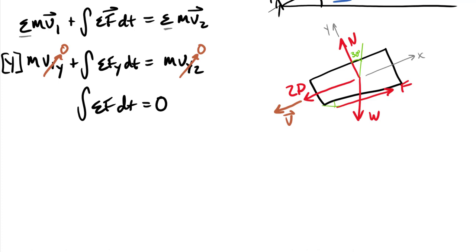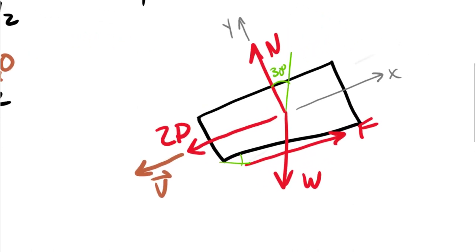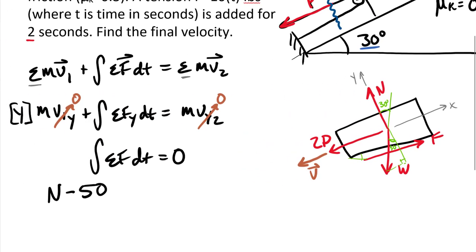So the forces we have going on in the Y direction, we have the normal force N in the positive Y direction, and we have minus the weight force is 50. Now here again zooming in, we have this angle. So this angle here is also 30 degrees. So as I take a look at a little triangle, the cosine component is going to be in the Y direction. So 50 times the cosine of 30 degrees.